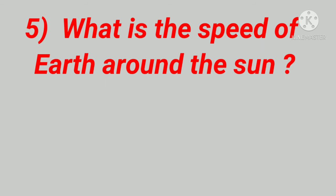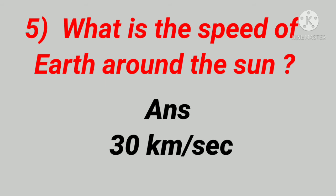What is the speed of earth around the sun? Answer: Thirty kilometers per second.